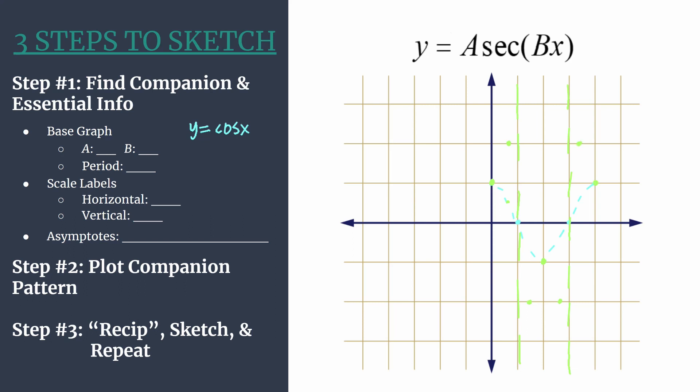So here's what this secant graph looks like. And you won't have to go through this every single time. Once you know what the secant graphs look like, it'll be very easy to just work from the companion. So we'd have a graph here. We have a curve here and we have one here. So this is one full cycle of a basic secant graph.